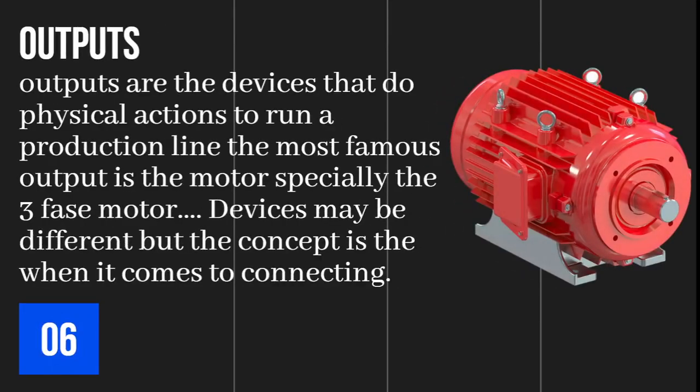Outputs are the devices that perform physical actions to run a production line. The most famous output is the motor, especially the three-phase motor in the industrial world. Output devices may differ, but the concept of connecting them is the same — they are all output devices connected in the circuit in a similar way, with differences only in the method of connection.